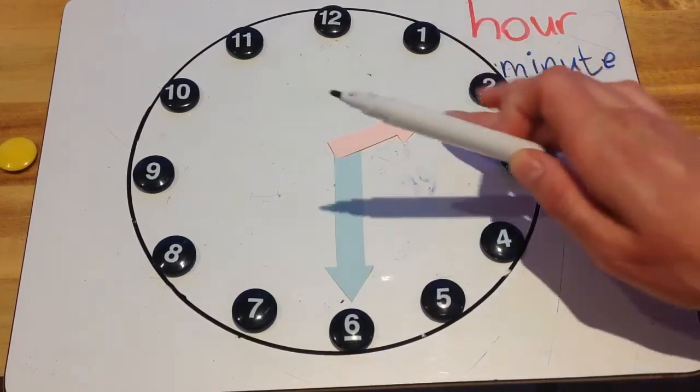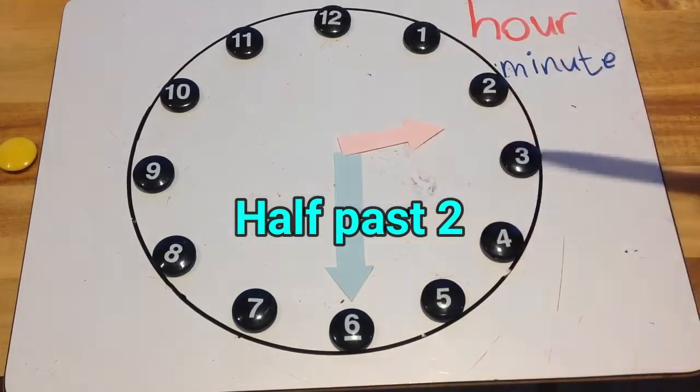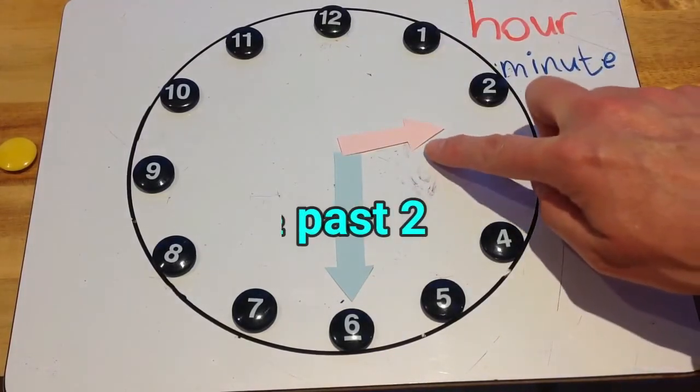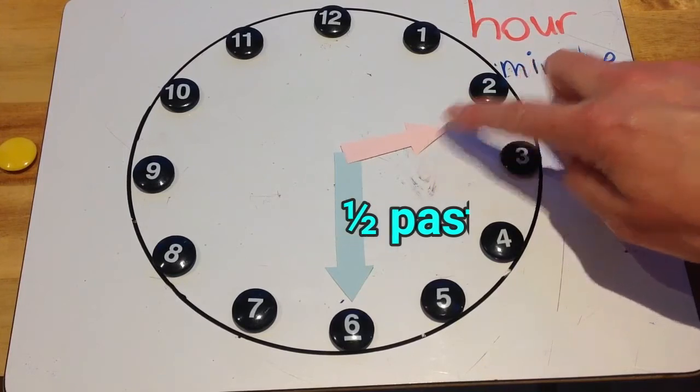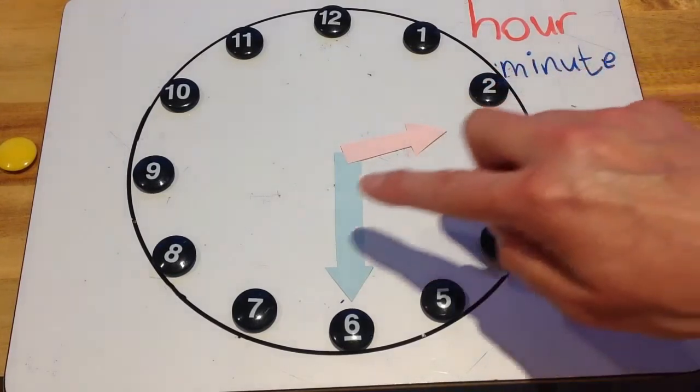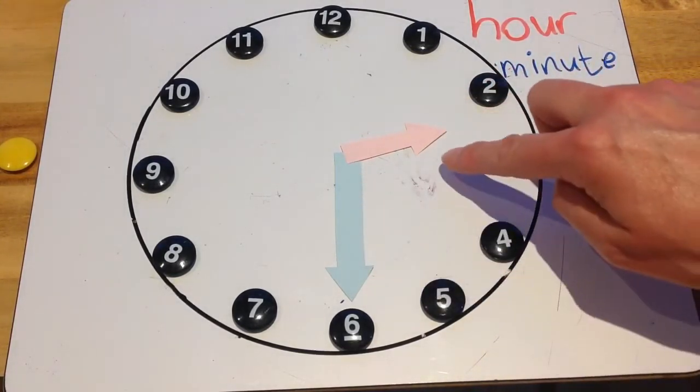And in this case, it's half past 2. And actually, that short hand will have moved just between the 2 and the 3. So we can say it's half past 2.